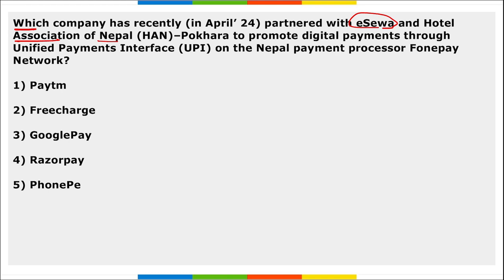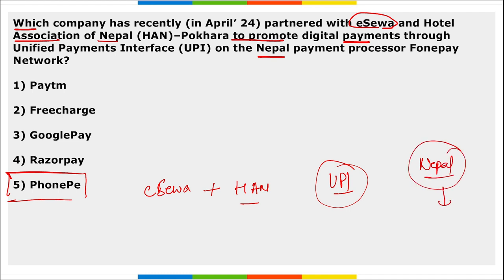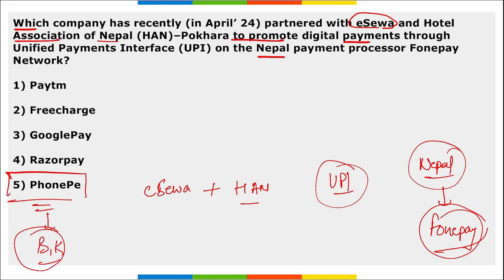Next: which company has recently partnered with eSewa and the Hotel Association of Nepal (HAN), Pokhara, to promote digital payments through UPI on Nepal's payment processor PhonePe network? It is PhonePe. PhonePe has partnered with eSewa and HAN to promote the usage of UPI in Nepal. PhonePe is a fintech company based out of Bengaluru, Karnataka, and they have partnered to increase the usage of UPI using their Nepal payment processor PhonePe network.